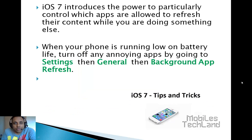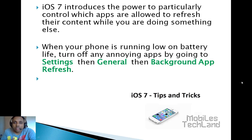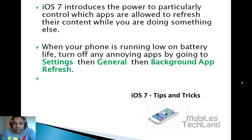iOS 7 introduces the power to particularly control which apps are allowed to refresh their content while you're doing something else. Which means when you're playing games or something, iOS 7 can allow your phone to control which apps are allowed to refresh. For example, your browser, anything you're browsing, your Facebook, your Twitter or whatever — any app, you can now control that.